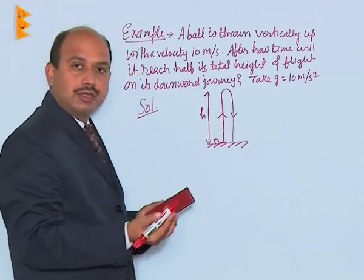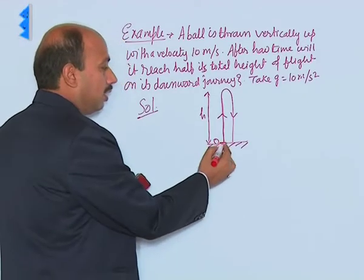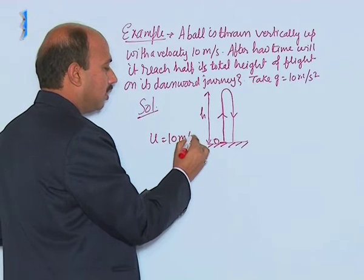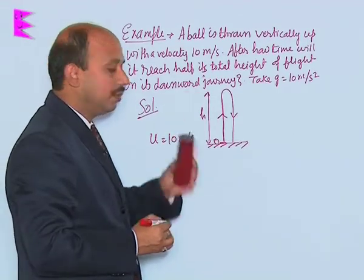Now in this case, first we start this question. Body is thrown up with the velocity we can write U is equal to 10 meter per second, it is going up so we have taken positive.